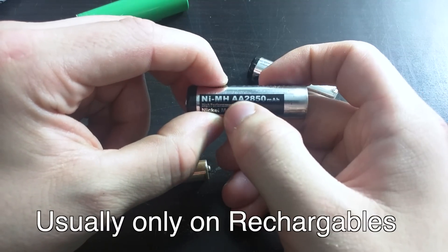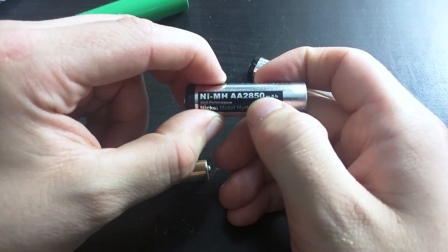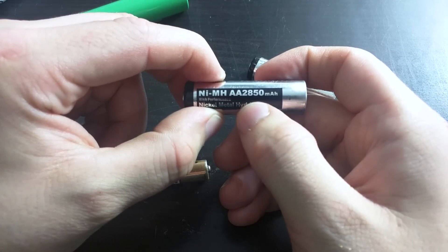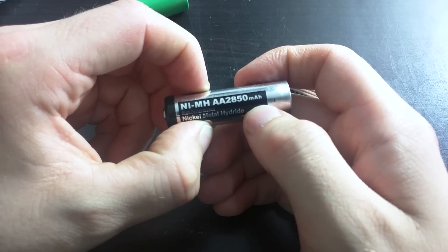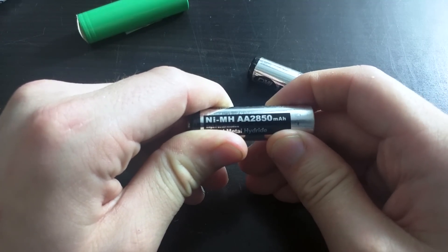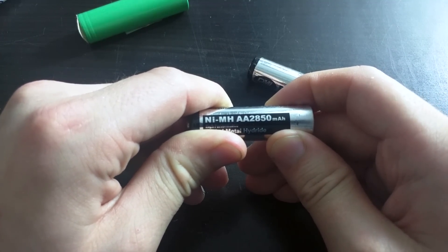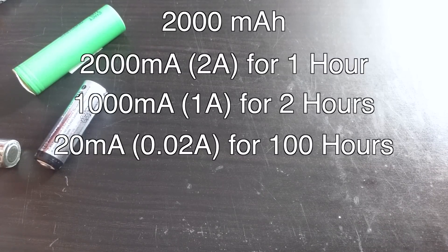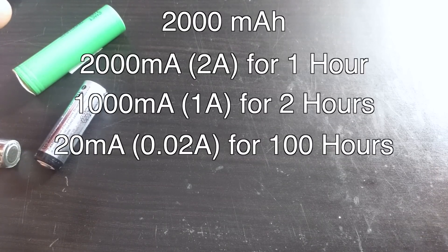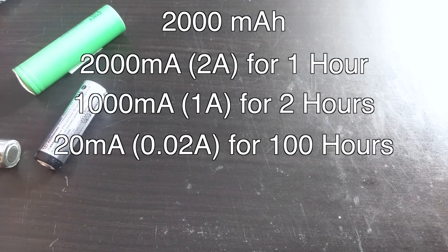When you purchase a battery, you usually see capacity ratings on the packaging or the battery itself. mAh stands for milliamp hour; sometimes you will see Ah, or amp hour. The milliamp hour rating gives you a good idea of how long it will last before it needs recharging. For example, a 2,000 milliamp hour battery means you can draw 2,000 milliamps (2 amps) for 1 hour, or 1,000 milliamps for 2 hours.